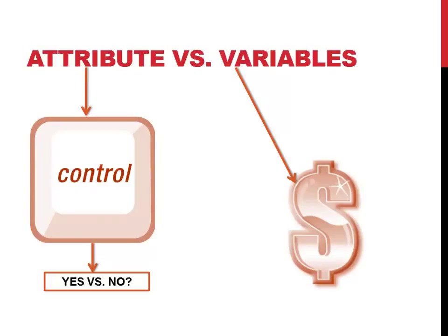So controls, when I'm looking at cash disbursements, do I have evidence that the voucher package includes a receiving report, a purchase order, and vendor invoice? Yes or no. That's an attribute.